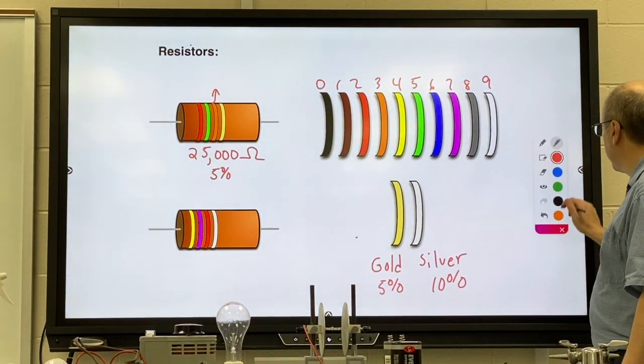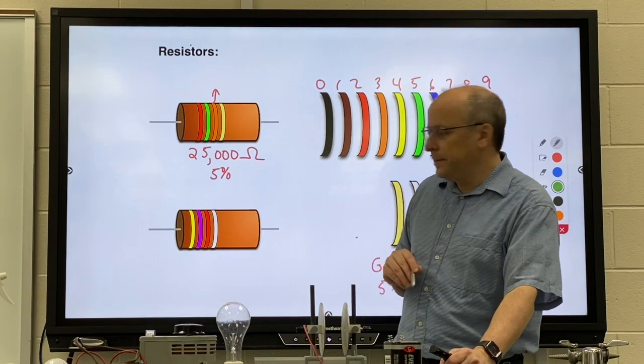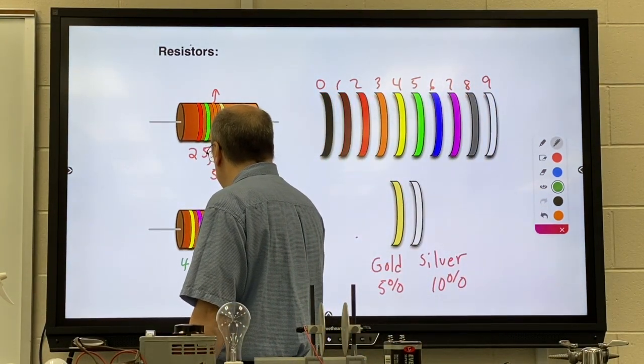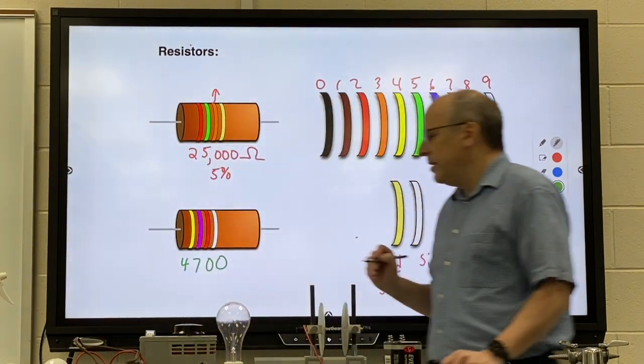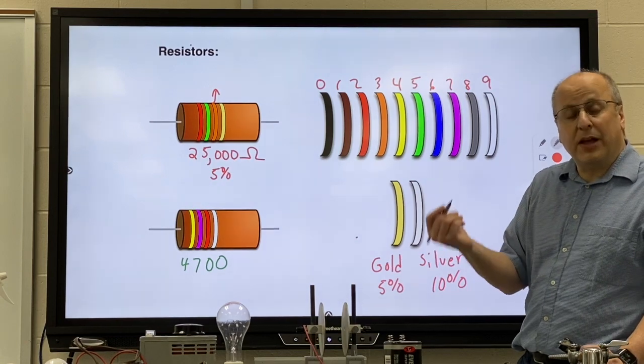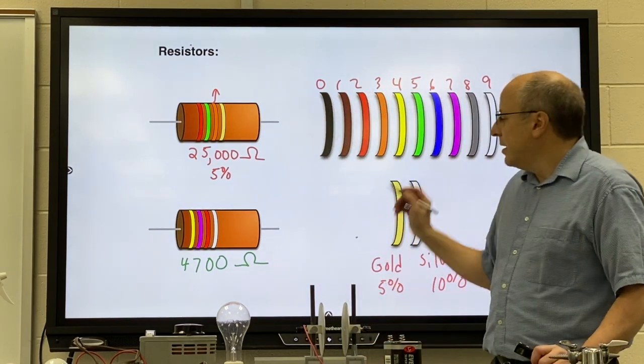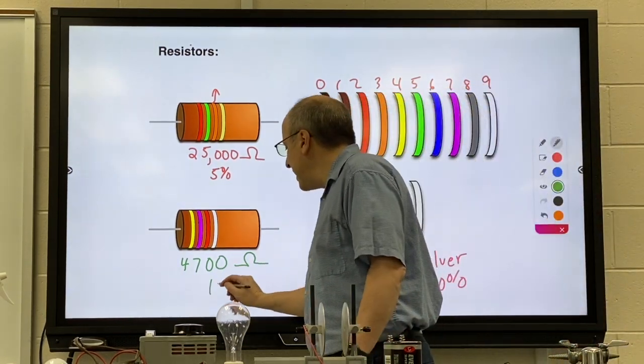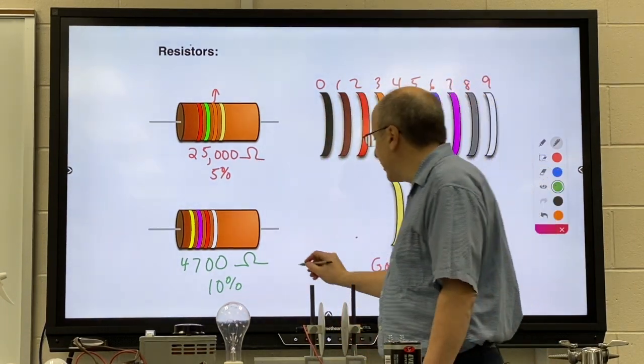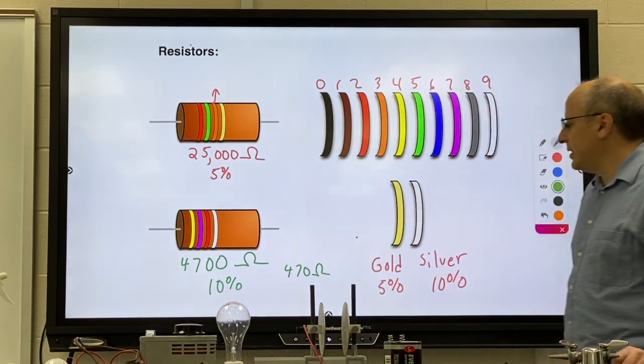The next resistor we're going to do has colors yellow, purple, red, white. The yellow is four, the purple is seven and the red is two. Again two zeros. The third stripe tells you the number of zeros. And then we put ohms. Since silver is the third stripe that means it could be off by ten percent. Ten percent is easy to work with. Ten percent of 4700 is 470 ohms.